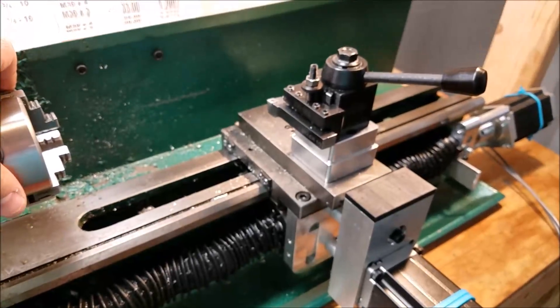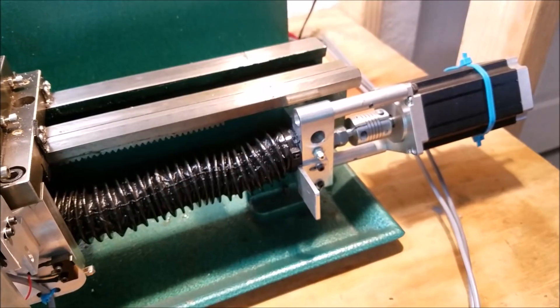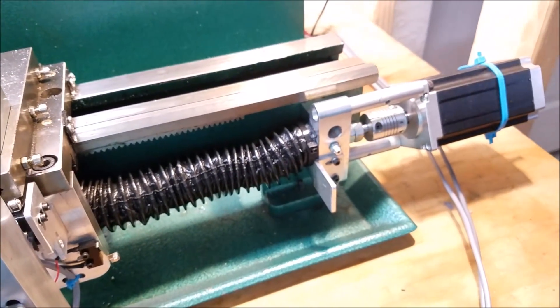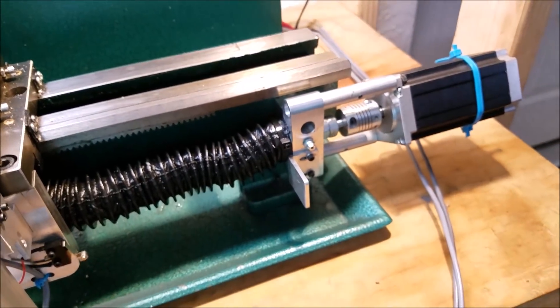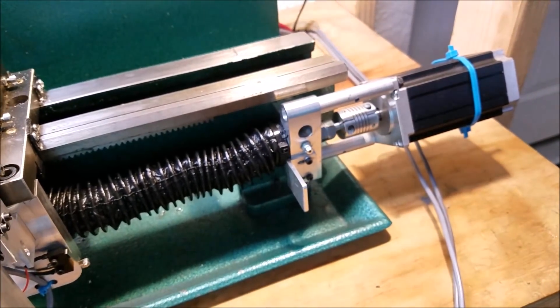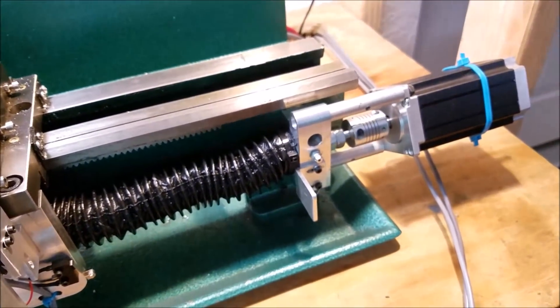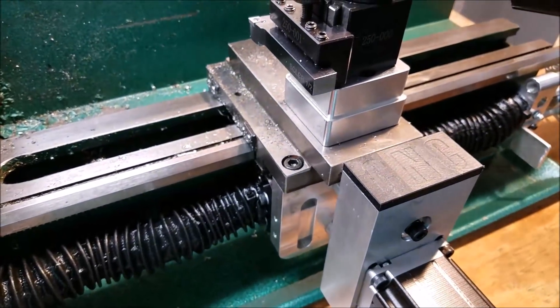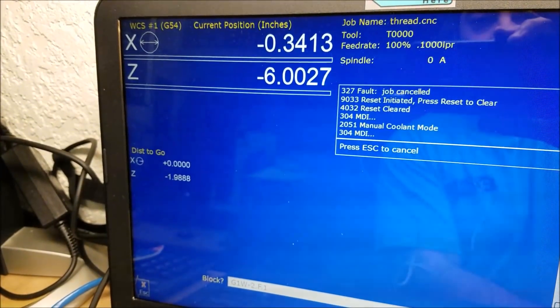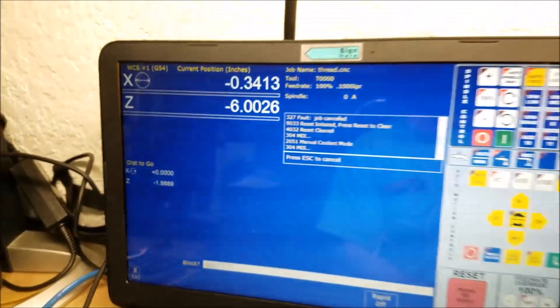This is pretty cool. This 100% real-time spindle feedback that the Centroid software gives you with an encoder, it's like the lead screw is like physically tied to the spindle, but it's all being done electronically. So the point of that, that little bit of backlash in the gear isn't really hurting anything.